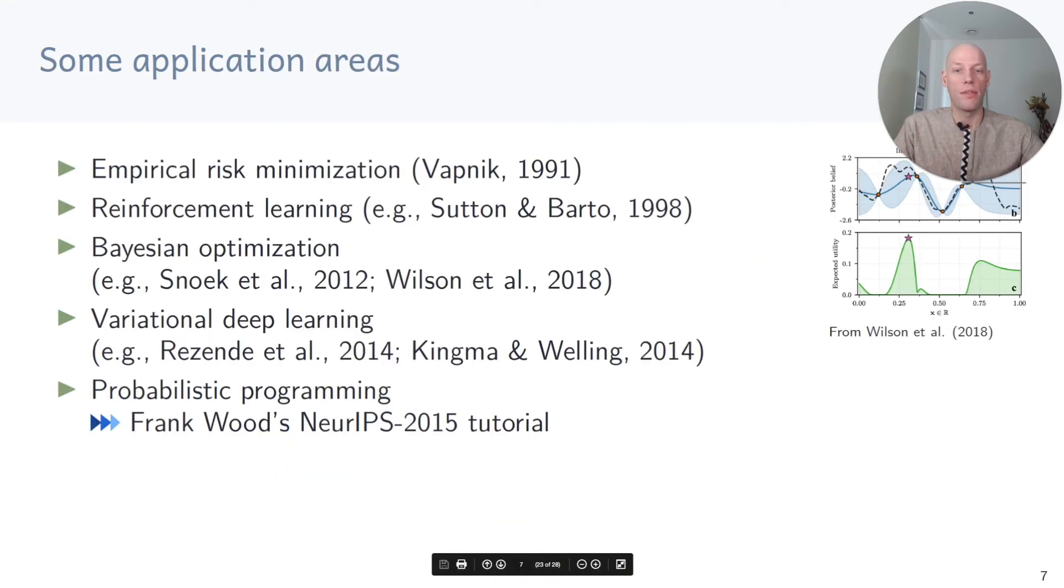Monte Carlo estimation has a range of different application areas. For example, anything that is related to empirical risk minimization, but it is also a key ingredient in reinforcement learning to compute expected long-term rewards or in Bayesian optimization for integrating out hyperparameters or computing acquisition functions. It's also frequently used in variational deep learning and in probabilistic programming.